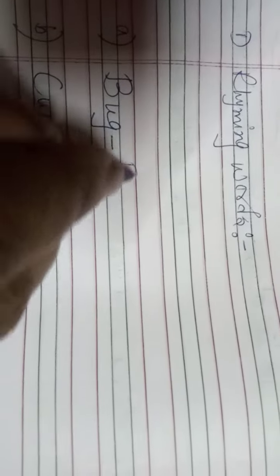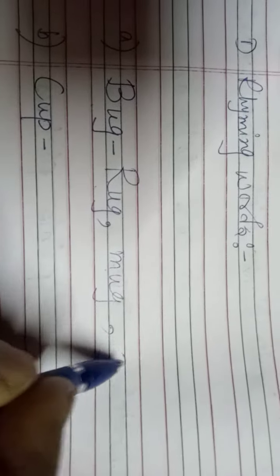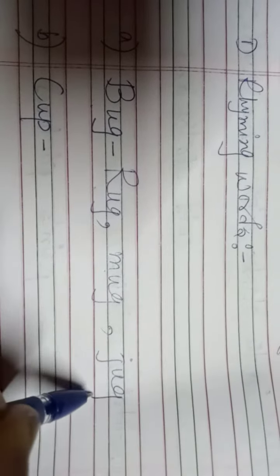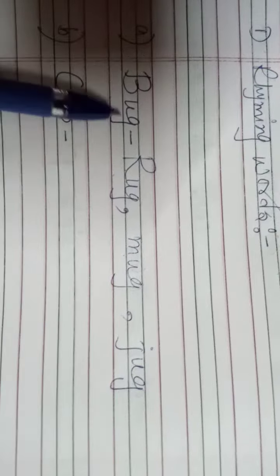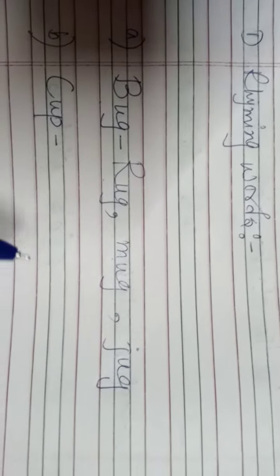You have to write, this is 'bug'. So bug, rug R-U-G rug, mug M-U-G mug, bug rug mug, jug J-U-G jug. Okay, so what are the rhyming words of bug? Rug, mug, jug, okay.